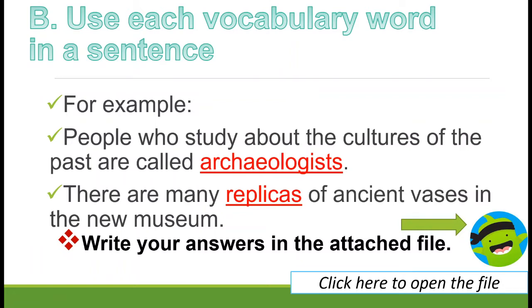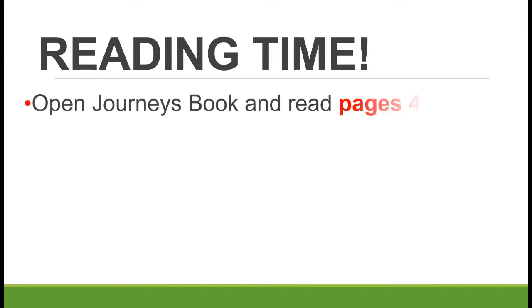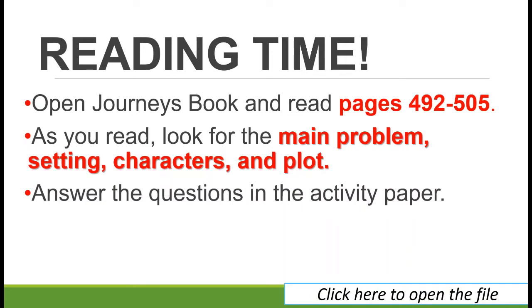We're done with the vocabulary activity. Now it's reading time. Get your Journeys book and open to pages 492 to 505. If you're a good, fast reader, you can read independently — pause this video and read on your own. As you read, look for the main problem, the setting, the characters, and the plot, just as we've done many times in class.